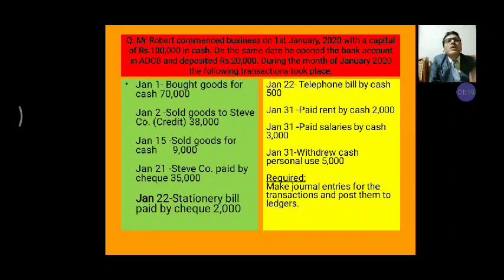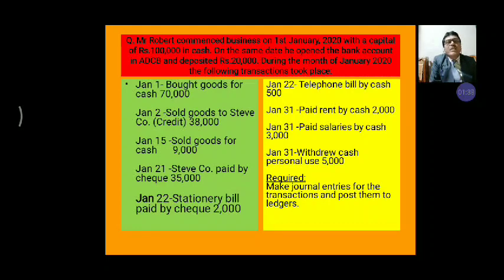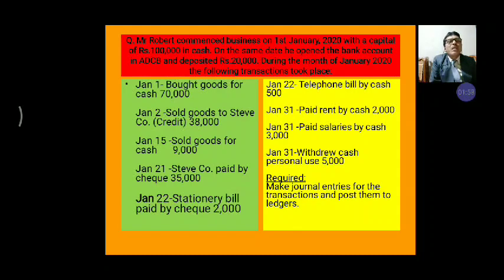First transaction: 1st January, bought goods for cash Rs. 70,000. 2nd January, sold goods to Steve company on credit Rs. 38,000. 15th January, sold goods for cash Rs. 9,000. 21st January, Steve company paid by cheque Rs. 35,000. 22nd January, paid cash for expenses. 31st January, paid rent by cash Rs. 2,000.